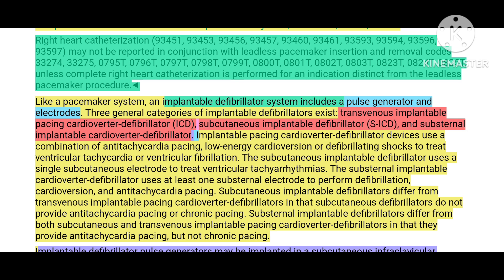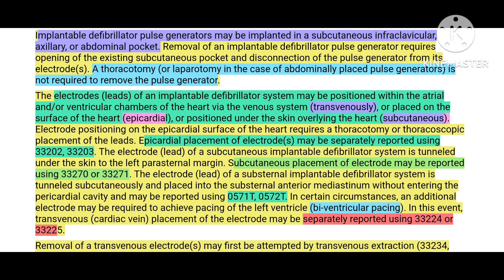The pulse generator of a defibrillator is usually placed below the skin — under the clavicle or collarbone, in the axilla (armpit) region, or in the abdominal pocket — within a subcutaneous pocket. Removal of the pulse generator does not require thoracotomy or laparotomy since it is placed through a skin pocket. The leads or electrodes are placed by transvenous approach, epicardial placement, or subcutaneous placement overlying the heart.